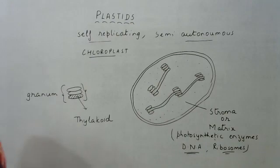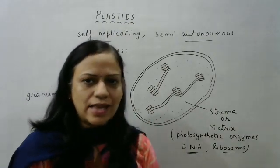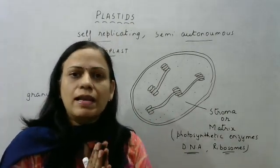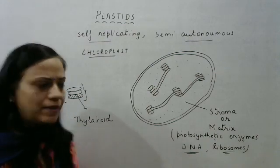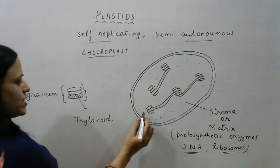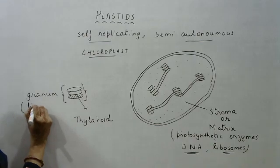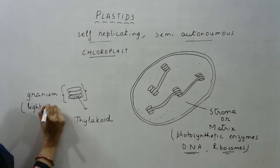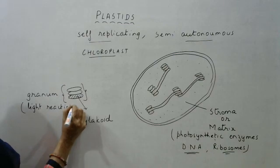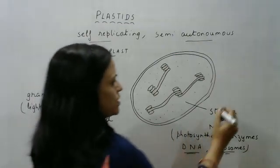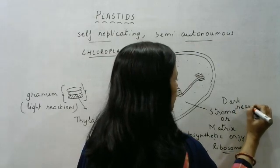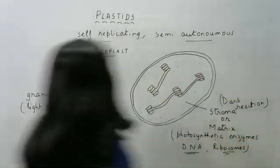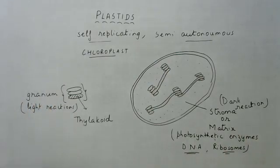Photosynthesis occurs in two parts: light reactions and dark reactions. Light reactions require the presence of chlorophyll, so the light reactions occur in the granum. The dark reactions occur in the stroma or the matrix. So light reactions occur in the granum and dark reactions occur in the stroma or matrix.